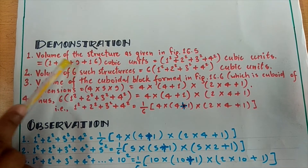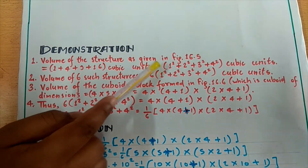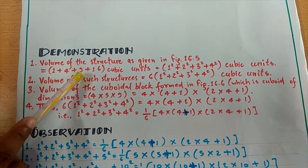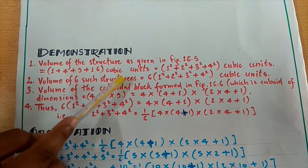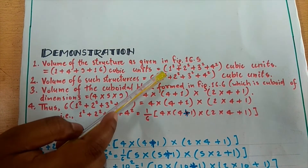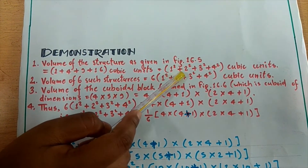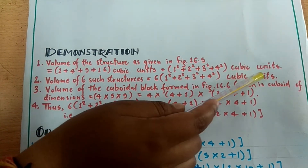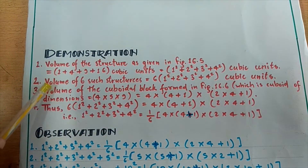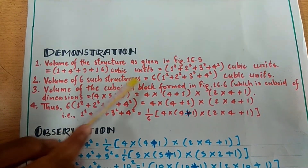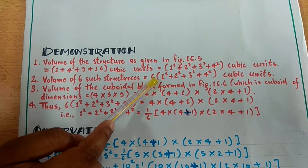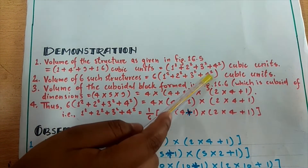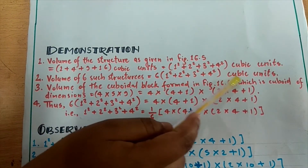Volume of the structure as shown here is equal to 1 plus 4 plus 9 plus 16 cubic units, which is equal to 1 squared plus 2 squared plus 3 squared plus 4 squared cubic units. Volume of 6 such structures is equal to 6 into (1 squared plus 2 squared plus 3 squared plus 4 squared) cubic units.